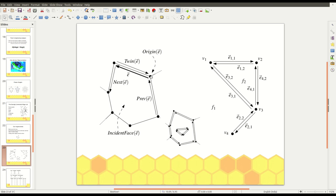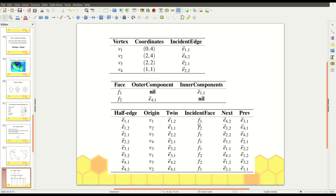So, for example, for e11, v1 is the origin and v2 is the destination. And e12 is the twin. And f1 is the incident face. For e11, v1 is the origin, e12 is the twin and f1 is the incident face. The same way, we are going to store all the information about all the half edges presented in our graph. So, this is the data structure that is used to represent a subdivision.